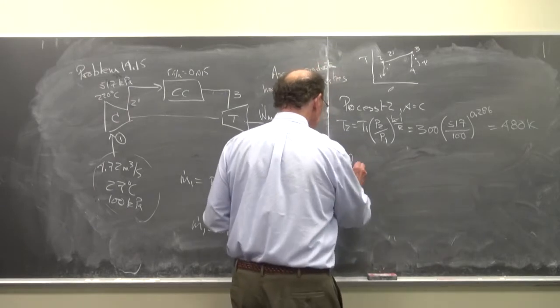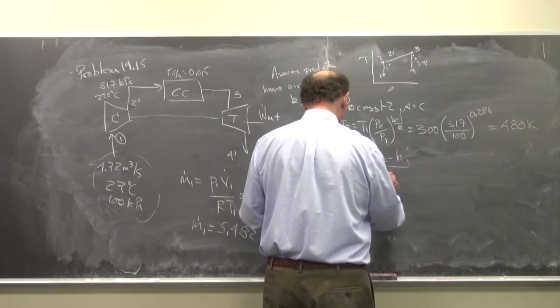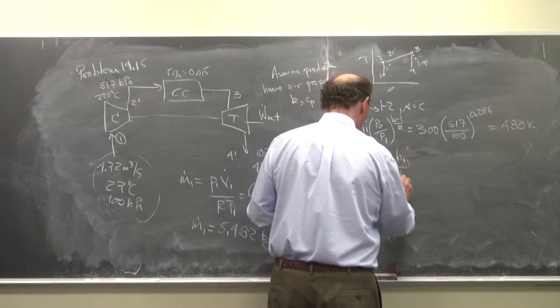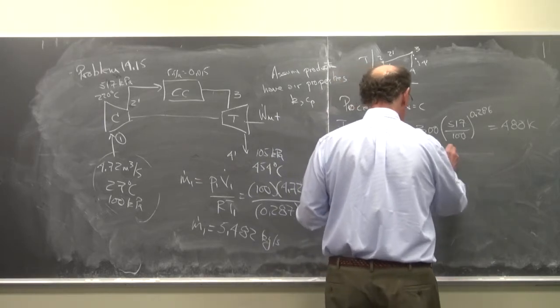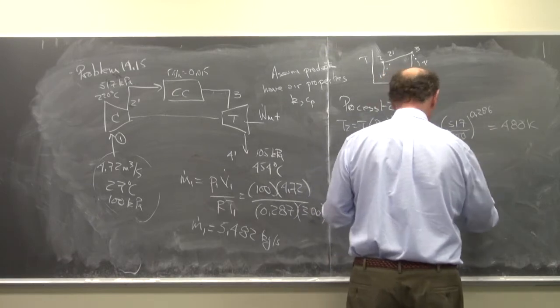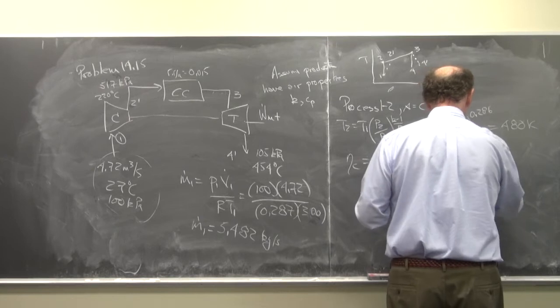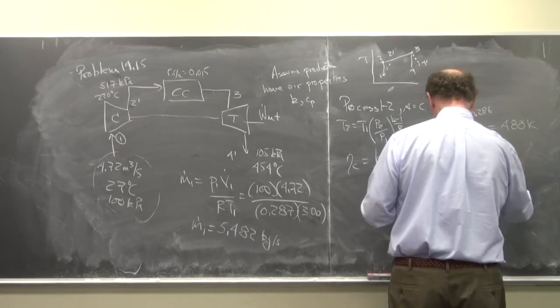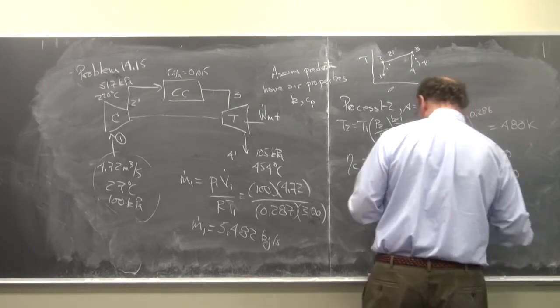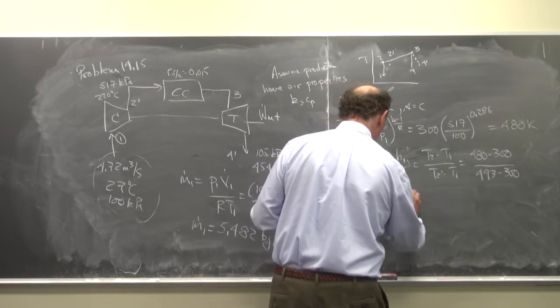And then eta sub C is equal to H2 minus H1 over H2 prime minus H1. So this is T2 minus T1 over T2 prime minus T1. So this is equal to 480 minus 300 over 493 minus 300. And with this we get that eta sub C is 0.933.